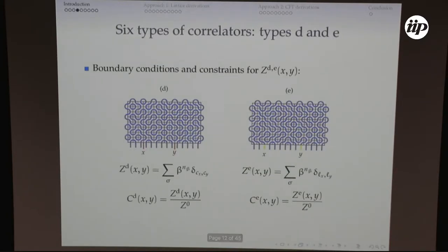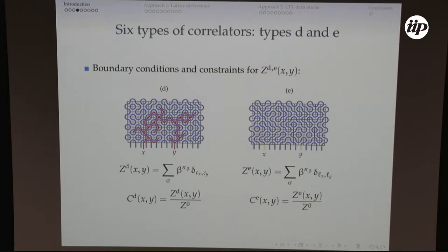Those are three types. For type D, I choose a Neumann boundary condition on the lower segment and set X and Y to different defects. At X, there's a cluster that lives at X, and this cluster is sometimes the same cluster as the one that touches Y. The correlation function I study is restricted to configurations where the cluster at X is the same as the cluster at Y. For type E, I focus on defects — two defects — and consider the partition function restricted to configurations where defect X is connected to defect Y.